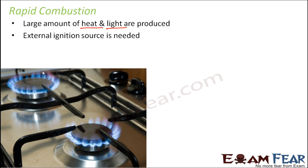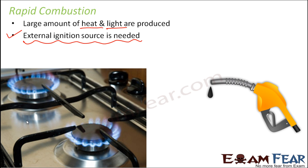In rapid combustion, an external ignition source is always needed. In the gas stove example, the external source was the matchstick — you need a burning matchstick or a gas lighter to ignite it. Similarly, for petrol or diesel, you also need some external source. As soon as you bring a burning matchstick near petrol, it immediately catches fire — heat and light are produced and the combustion process happens very, very fast.